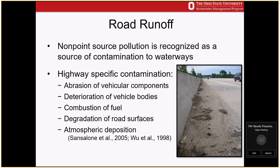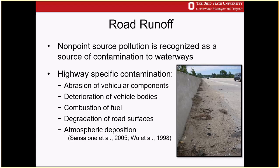For road runoff specifically, there are particular pollutants in highway situations. A typical Jersey barrier on an interstate shows sediment and debris accumulation, vegetation, and vehicular parts from accidents. Highway-specific pollutants include abrasion of brake pads and tires, combustion of fuel leading to atmospheric deposition of pollutants settling onto the road surface, and degradation of the road surface from vehicular traffic and plowing in the wintertime.